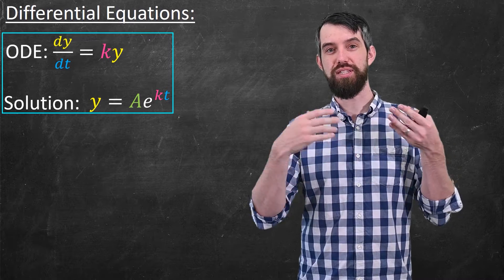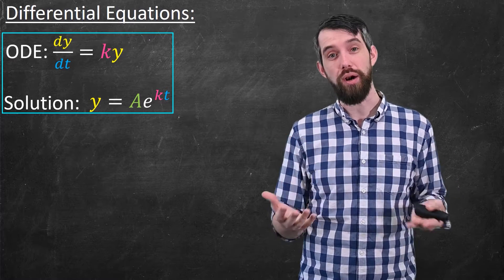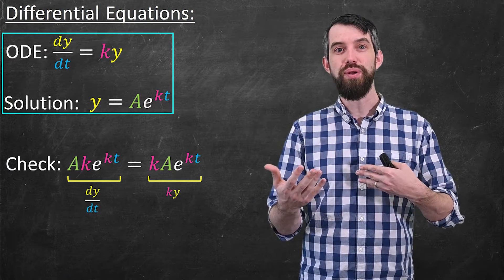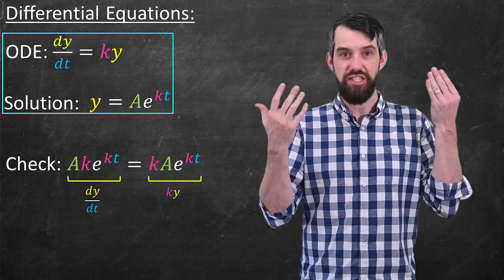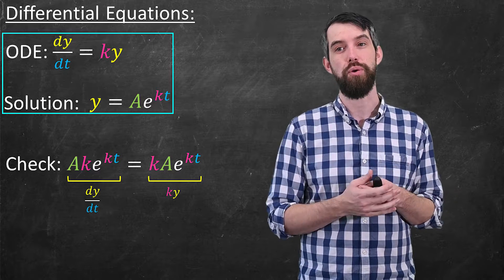Indeed, if you just take this y and plug it in, it works. When you take the derivative, you would get kAe to the kt is equal to k times Ae to the kt. It's the same thing on both sides, so it works out.